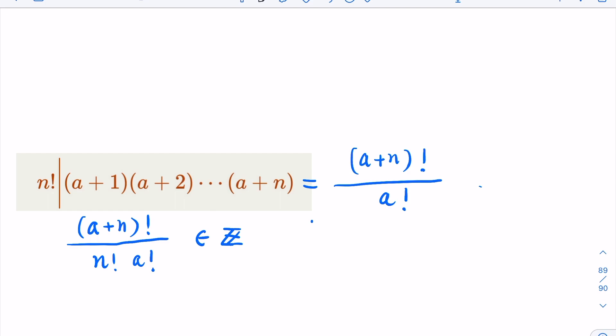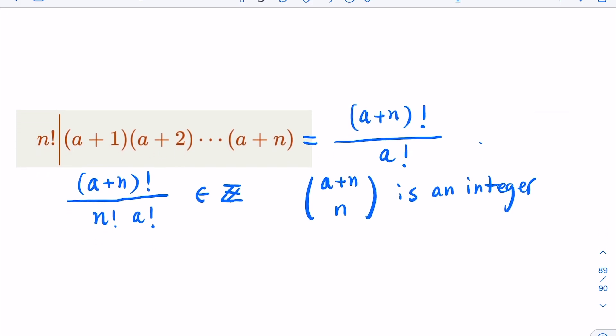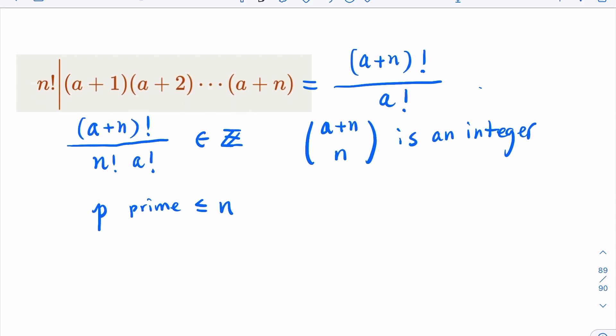We're going to consider what is (a+n)! divided by n! and a!. We want to prove that this is an integer. This is nothing but the binomial number. So in other words, we try to prove the binomial number (a+n) choose n is an integer. So if we prove this is an integer, then that means this part must be a multiple of n factorial. How do we prove that? So we're going to use the Legendre formula here. We're going to consider any prime p less than or equal to n.